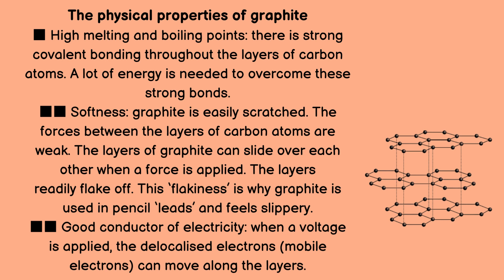Graphite is a good conductor of electricity. When a voltage is applied, the delocalized electrons — mobile electrons — can move along the layers.